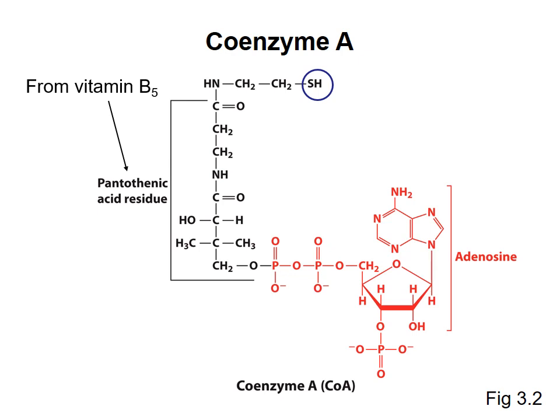You can think of coenzyme A as a carrier molecule — it shuttles around different smaller molecules and lets them undergo reactions. A good example is acetyl coenzyme A, where a two-carbon acetyl group is joined to the thiol through a thioester linkage. When this thioester linkage is broken, it releases energy, so you can think of this as a high-energy compound or the acetyl group as being activated and prepared to undergo a subsequent reaction. We'll see coenzyme A at various points in the remaining metabolism section.